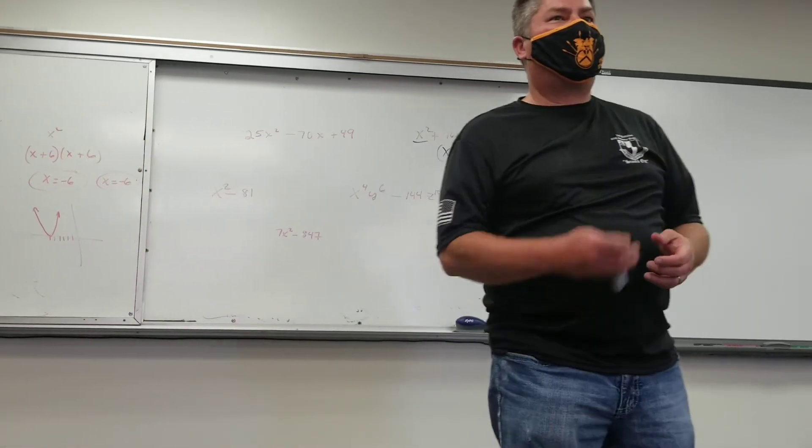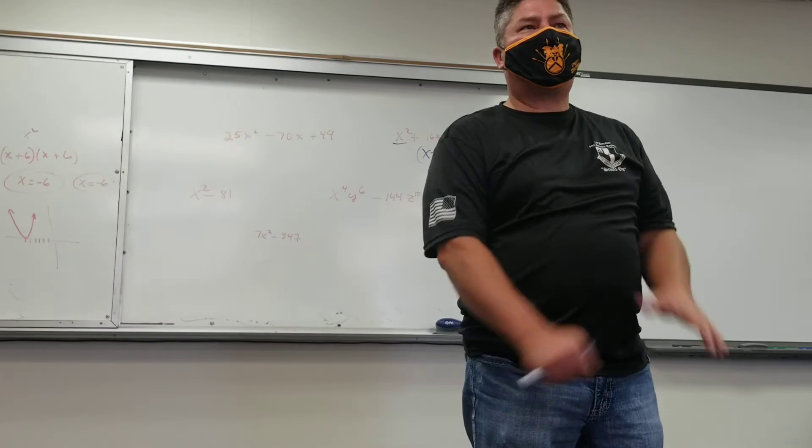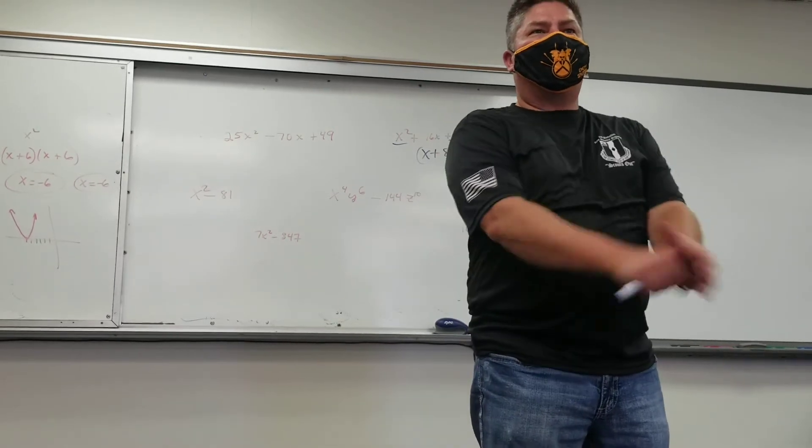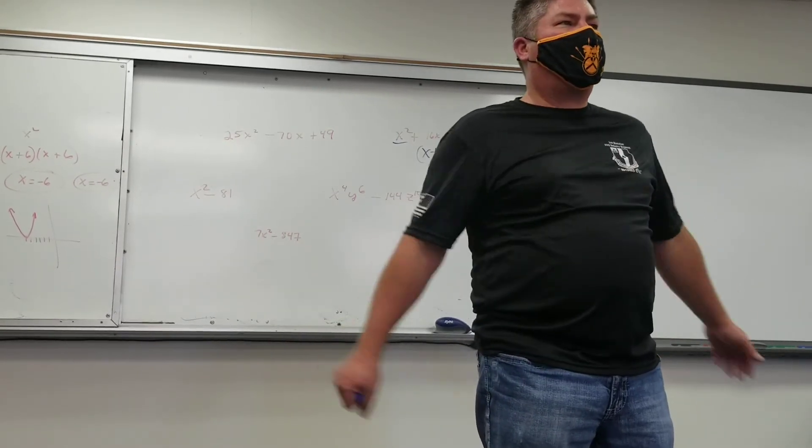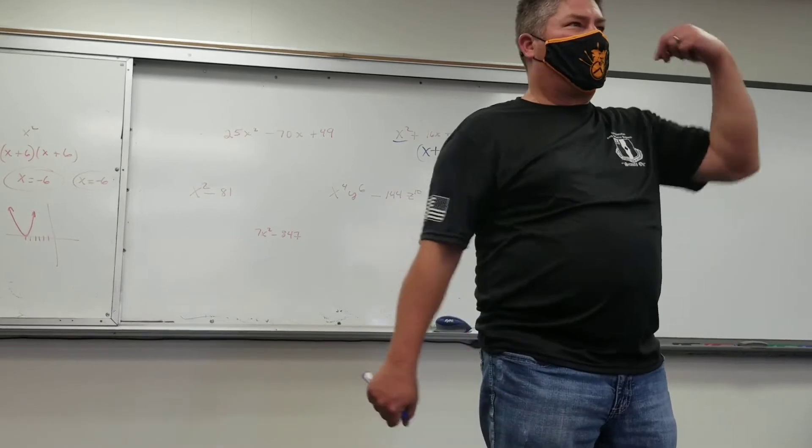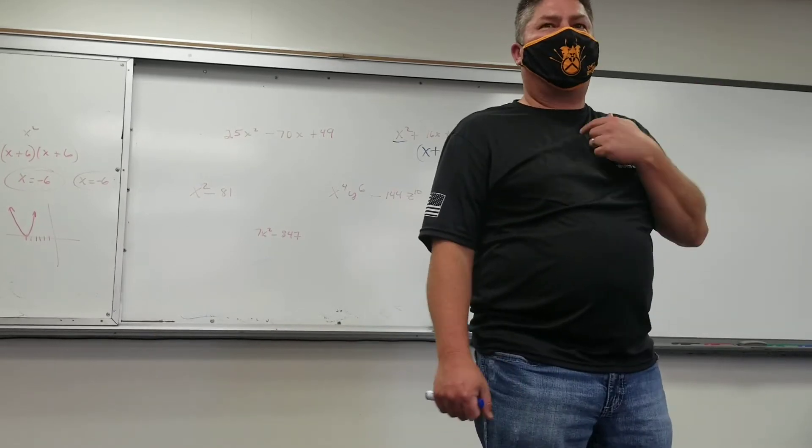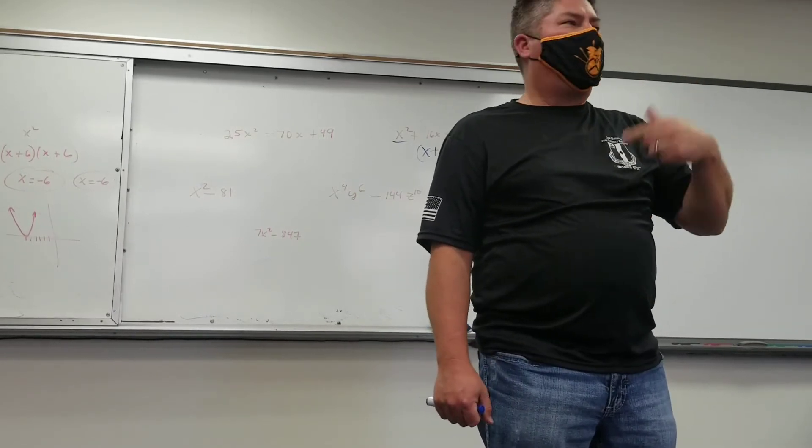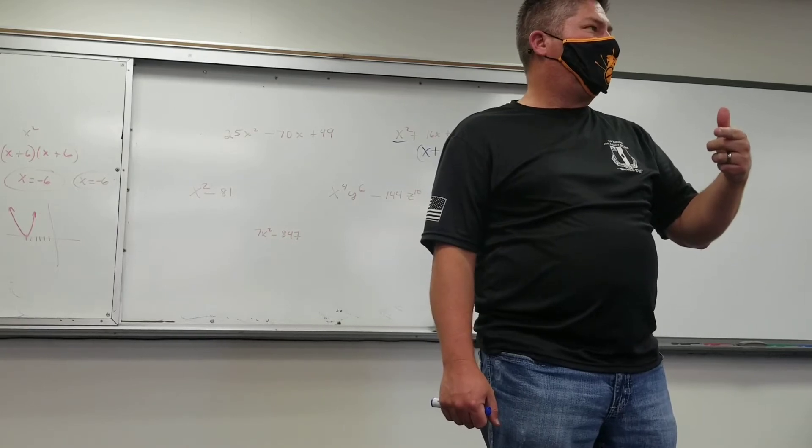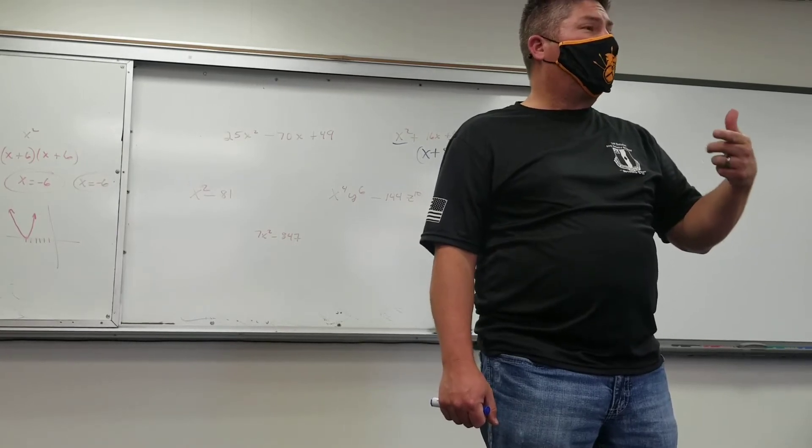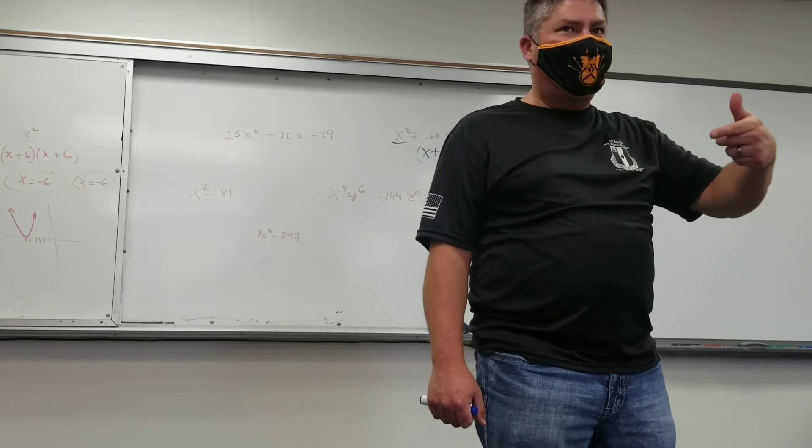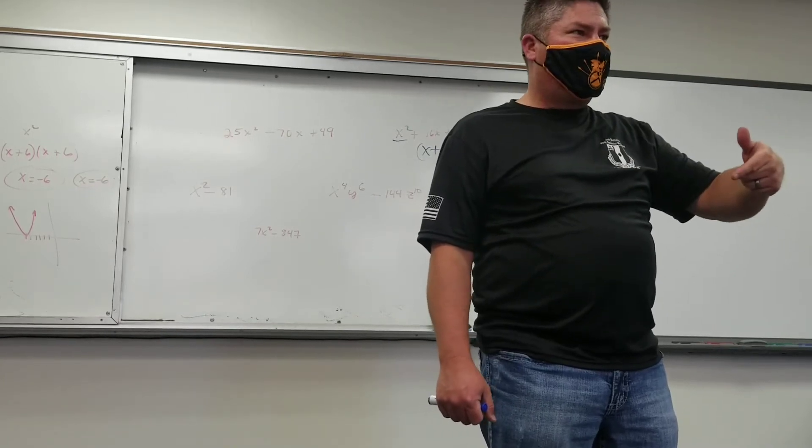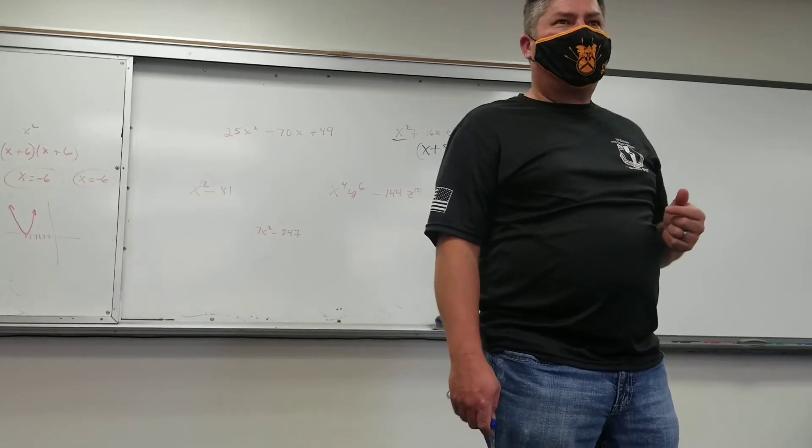What's the first perfect square? 1. Why? 1 times 1. What's the next perfect square? Just write these down a page. It's really quick. 1, then what? 4. Why is 4 a perfect square? 2 times 2. Next one? 9. Next one? 25. Next one? 36.